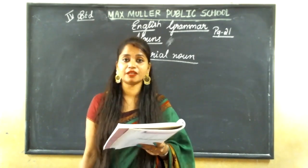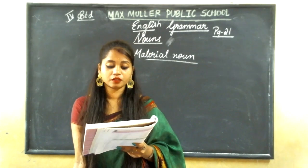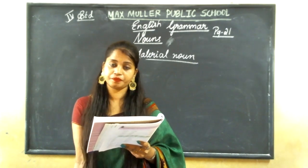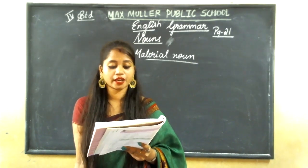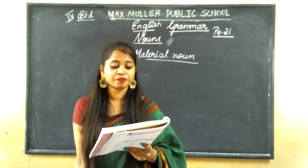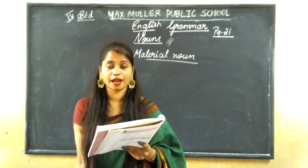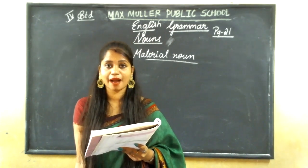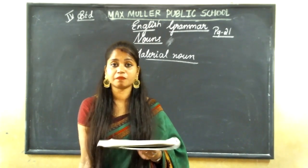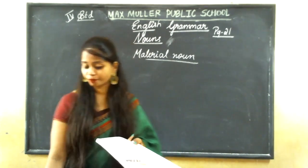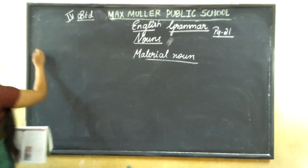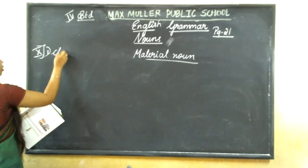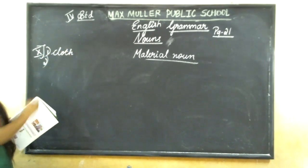Now the exercises. They have given some options: clay, cocoa, gold, silver, stone, sand, cloth, paper, plastic, milk. These are the materials. They have kept blanks for the materials we have to fill. For example: Kathy has a bag in her hand — that bag is made of cloth.